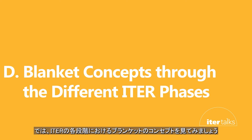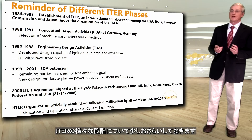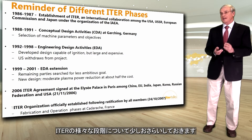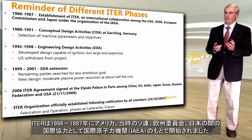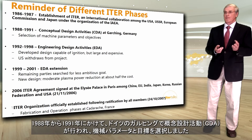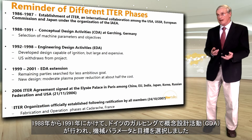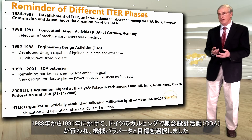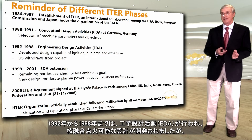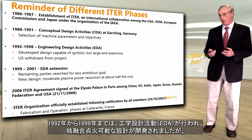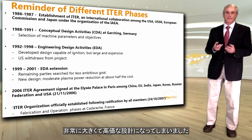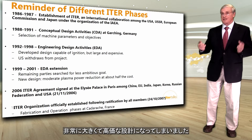Now let's look at the blanket concepts through the different phases of ITER. ITER was established in 1986-87 as an international collaboration among the USA, the USSR, the European Commission, and Japan under the IAEA. From 1988 to 1991, the conceptual design activities were held in Garching, Germany, to select machine parameters and objectives. From 1992 to 1998, the engineering design activities phase was held, where the design was developed capable of ignition, but it turned out to be a very large and expensive design.